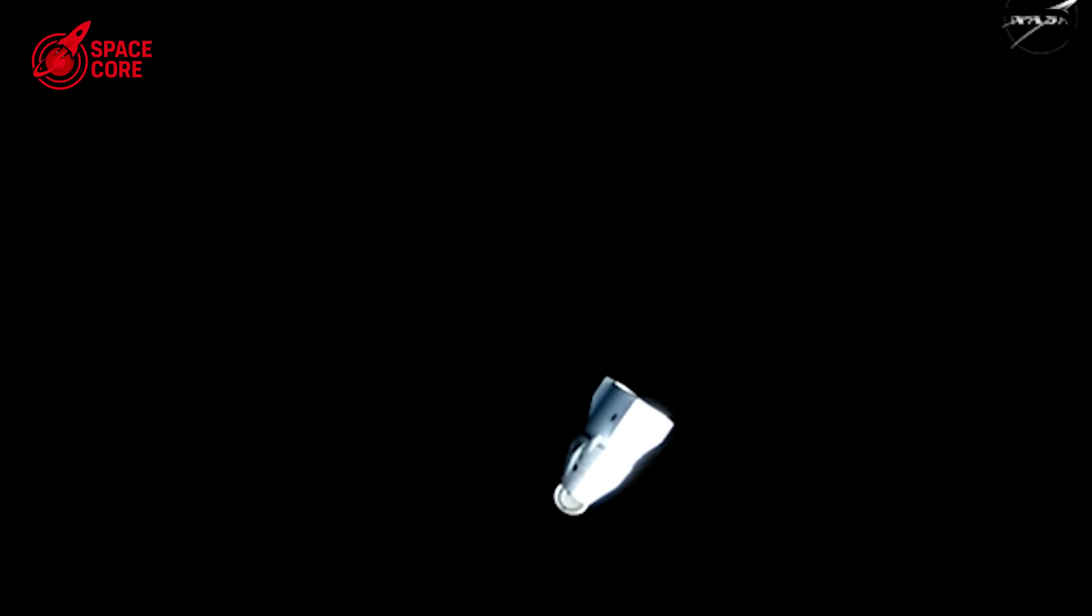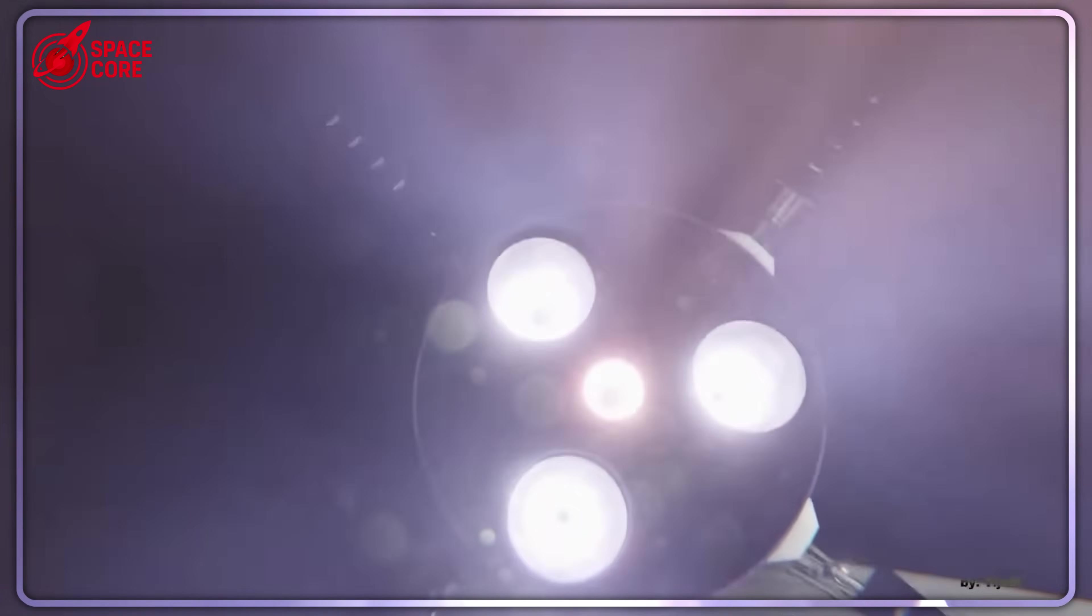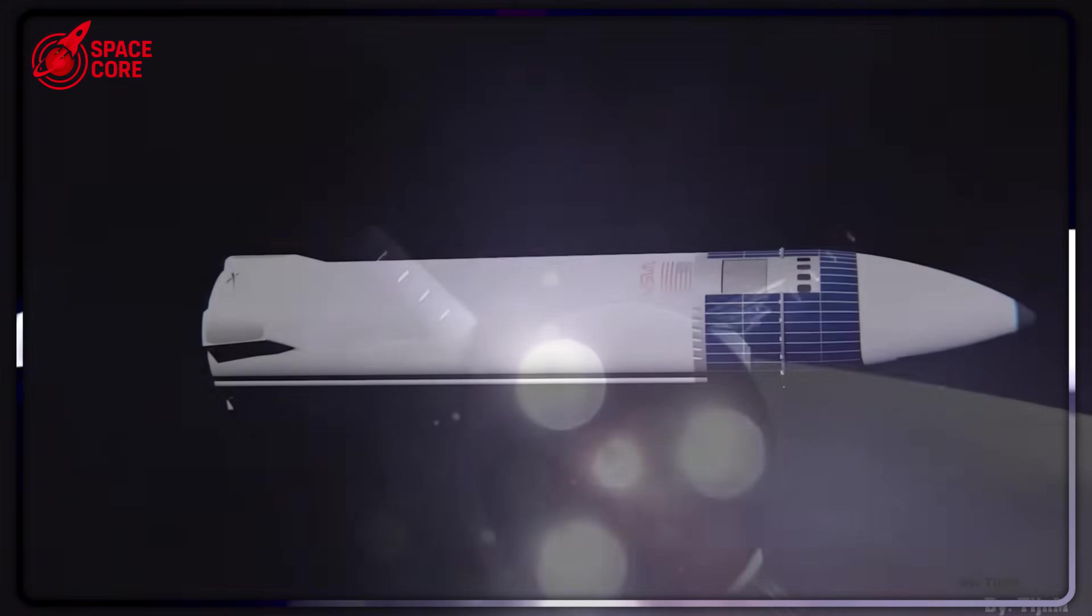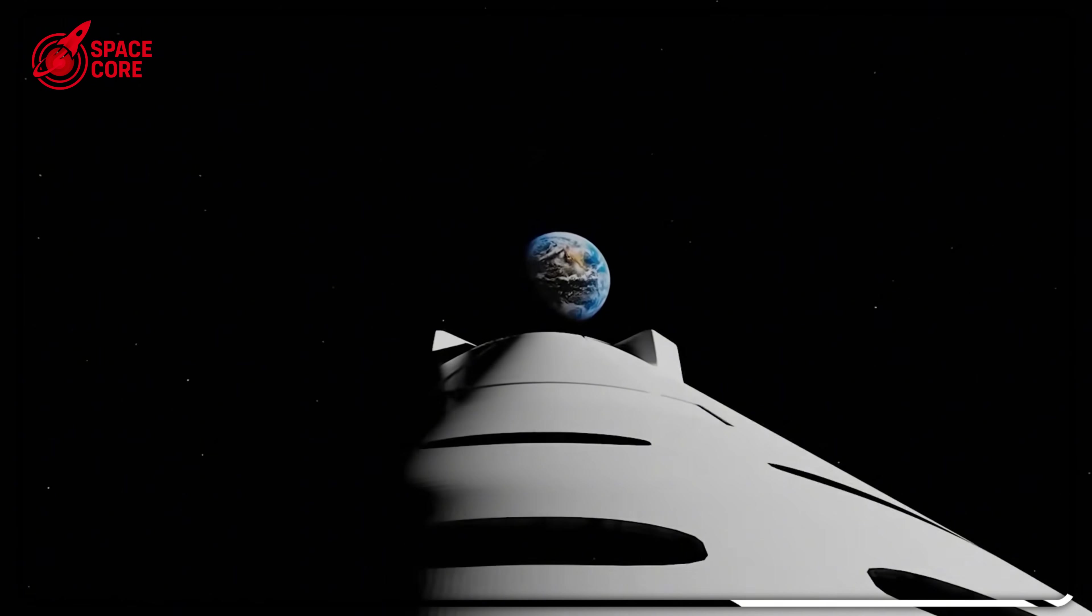This obsession spawned Red Dragon, a secret 2018 mission to land an unmanned dragon on Mars using pure rocket power. It would prove propulsive landing could work on another planet and open the door for human colonization. The timeline was insane. The technology was untested. But Musk was determined to beat the 2018 Mars launch window, an opportunity that wouldn't come again until 2020.